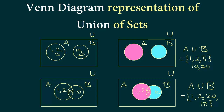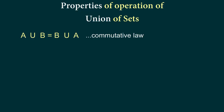Now let's look at some properties of union of sets. The first property is the commutative property: A union B is the same as B union A. Logically this makes sense because both represent a set containing all elements of A and B, so the result is the same set regardless of order.